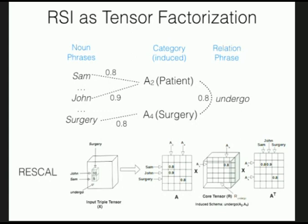This RESCAL-style factorization is not something we invented — people have been working on tensor factorization for a while — but it's interesting that it maps directly onto our relation schema induction problem. The factorization breaks the tensor into components, and the goal is to minimize reconstruction error: the product A × R_core × A^T gives a tensor X', and we want X' to be as close to the original tensor X as possible.